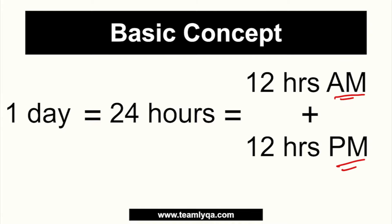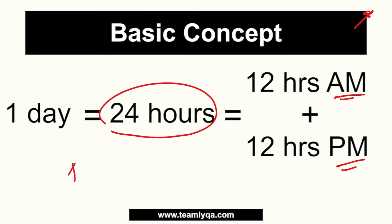The trick with time questions is you have to understand its thresholds. The threshold for hours is 24. And then for each hour, one hour is equivalent to 60 minutes — we already discussed this in the time conversion video, which I'll link here. So when you're adding time, remember that when you go past 60 minutes, that means you've passed another hour.